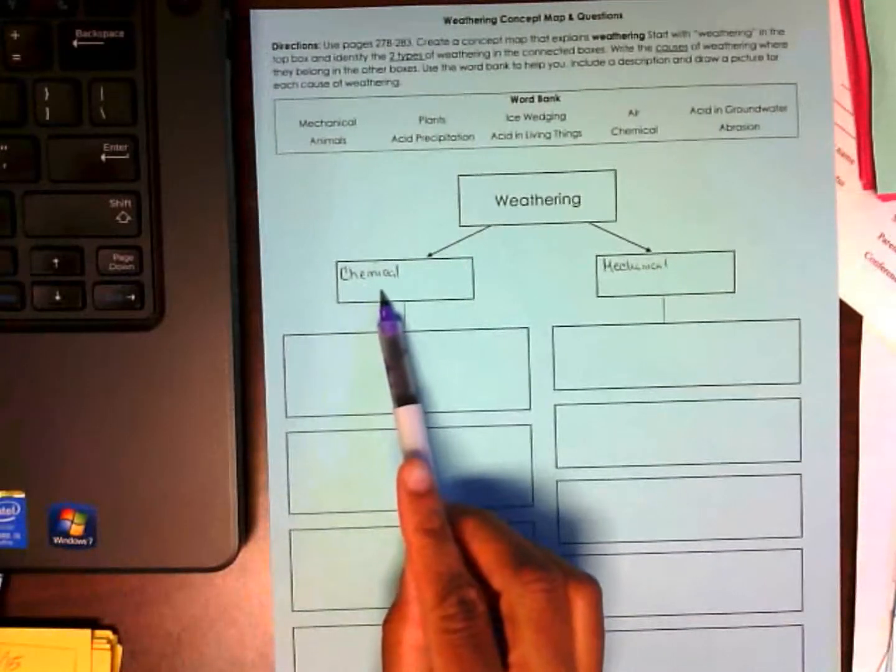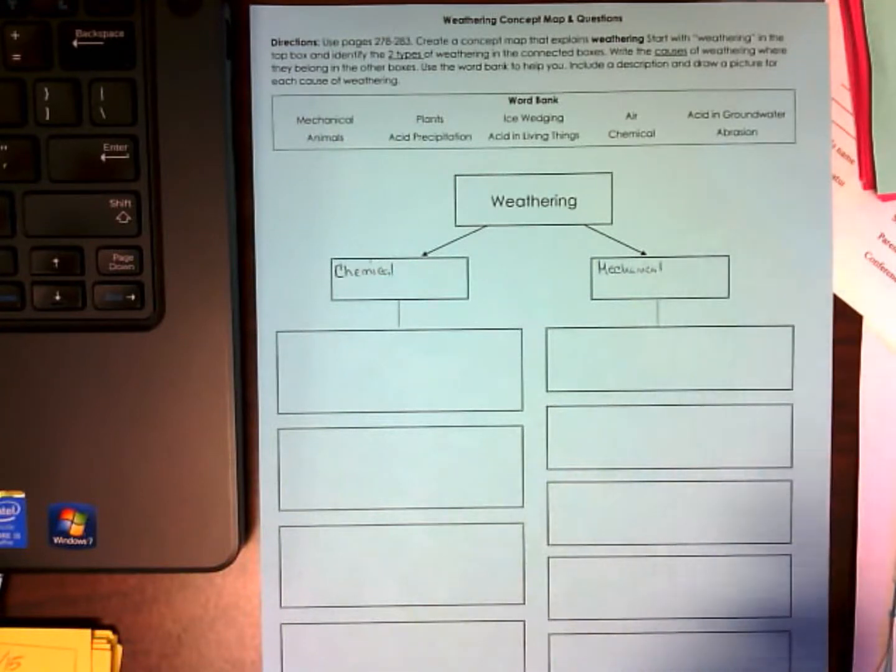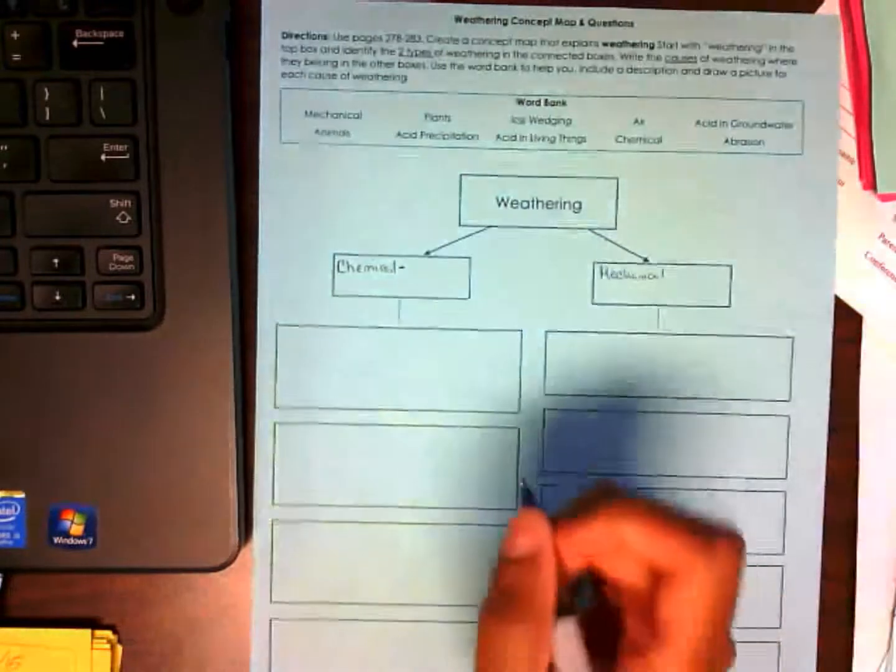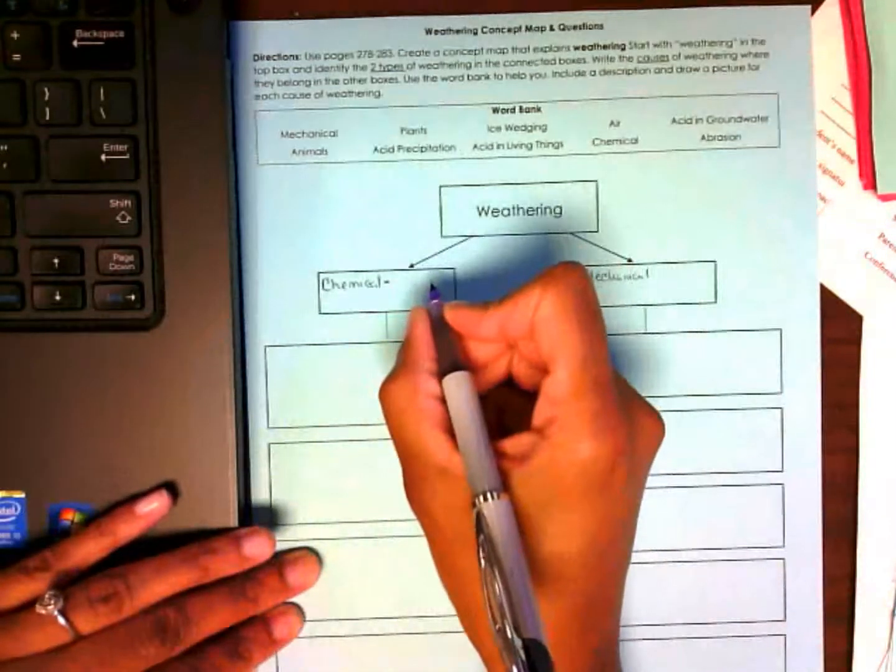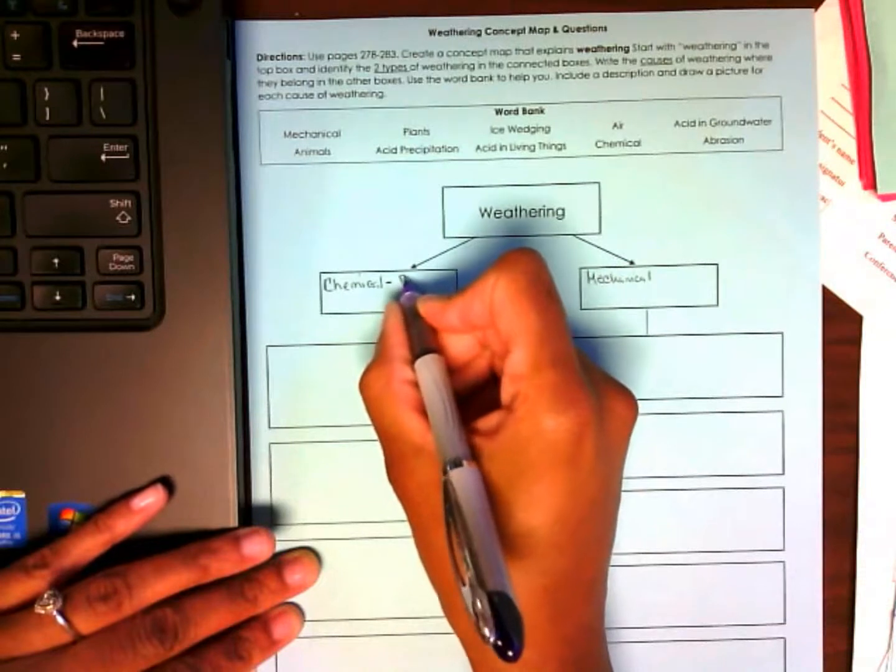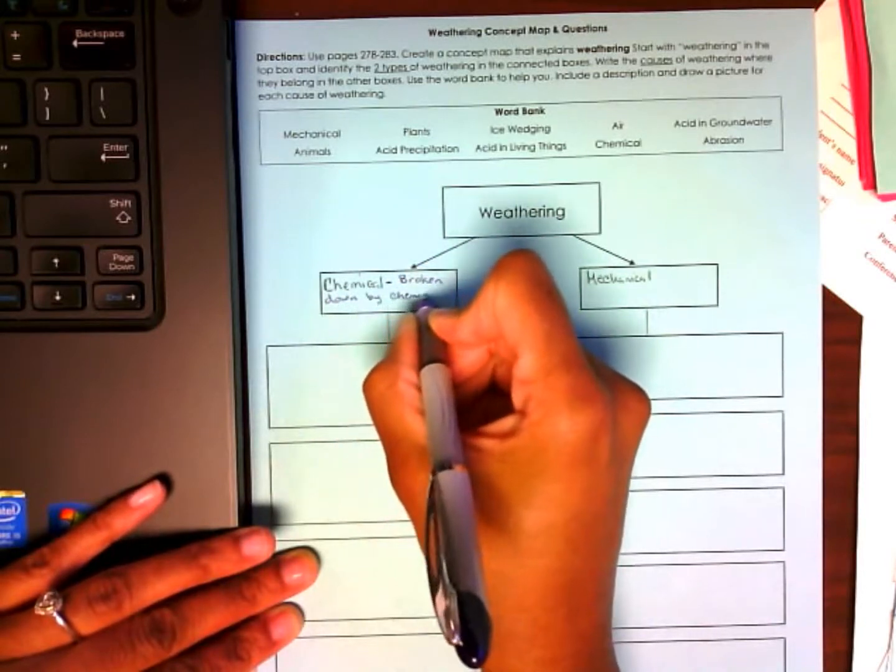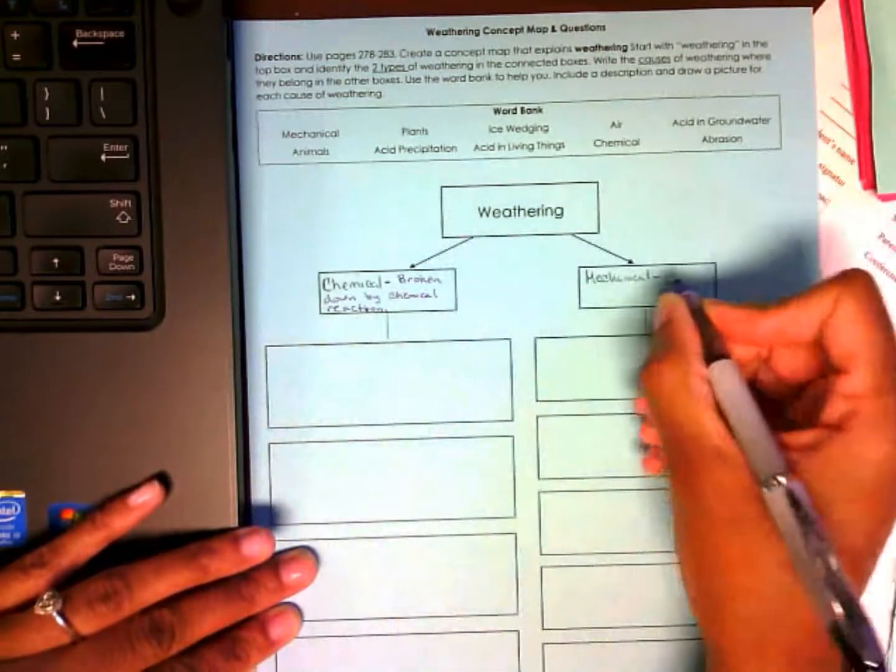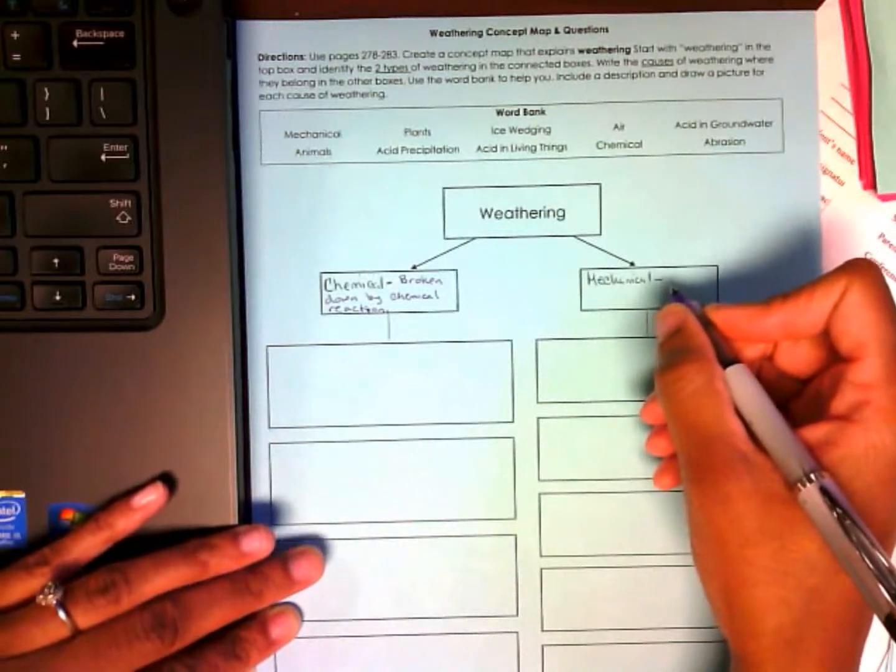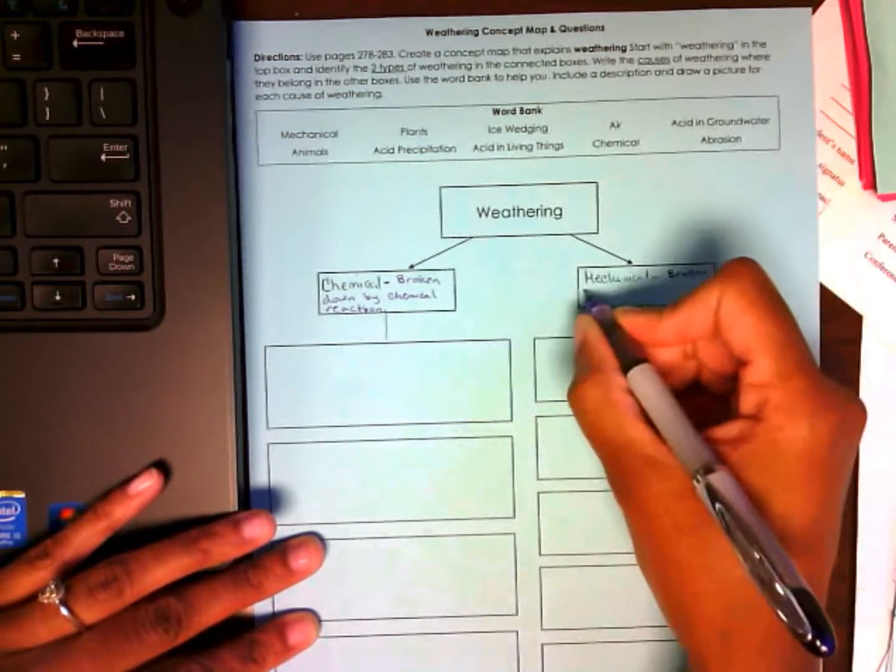So, to my left you should have wrote the word chemical. And to my right you should write the word mechanical. What is another word for mechanical? Aaliyah. Physical, thank you. So, you need to write chemical. What does chemical weathering mean? The Asia. It means when rocks are broken down by chemical reaction. Alright, broken down by chemical reaction. And so what does mechanical mean? Rayshawn. Rocks are broken down from physical reaction. Very good. Broken down by physical means.